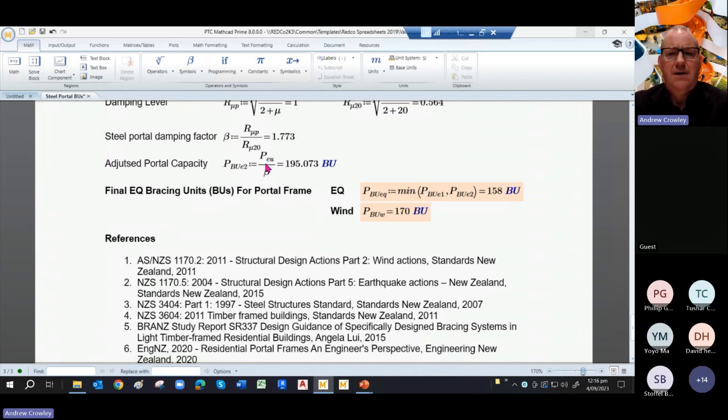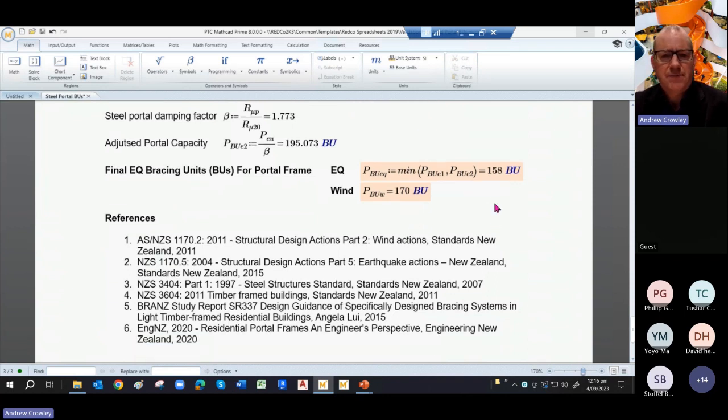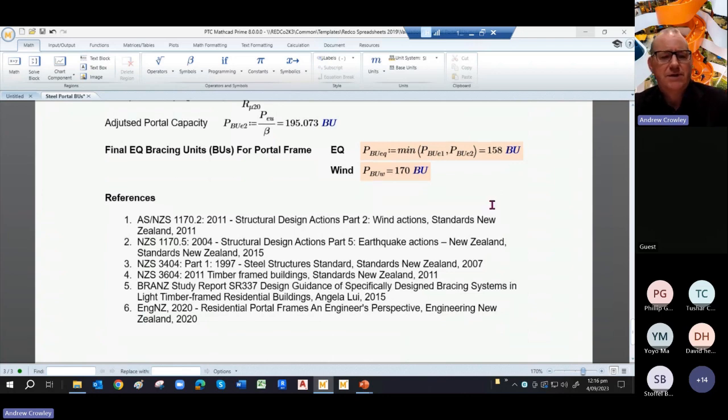Now normally we're looking at damping levels of about 5%, whereas the jib framed house is looking at damping around 20%. That's quite a lot of damping. And to put that in perspective, you end up with a steel portal damping factor of 1.73, which then adjusts our potential BUs to 195 BUs. However, that is bigger than we've already calculated, so you take the minimum.